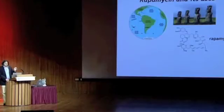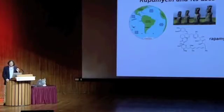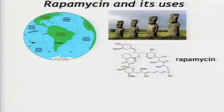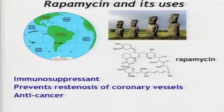Insight into the TOR pathway comes from an interesting angle — from this small molecule, rapamycin. I would argue this is one of the more interesting molecules out there. It's a natural product, made by bacteria, found originally on Easter Island, where you find these very interesting statues that people don't really understand. This molecule has had profound clinical impact in immunology, in cardiology, and increasingly in cancer.